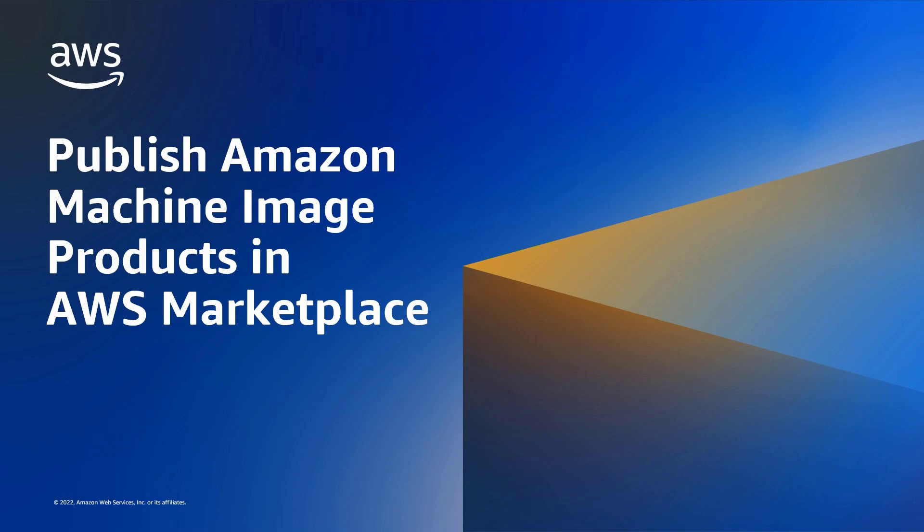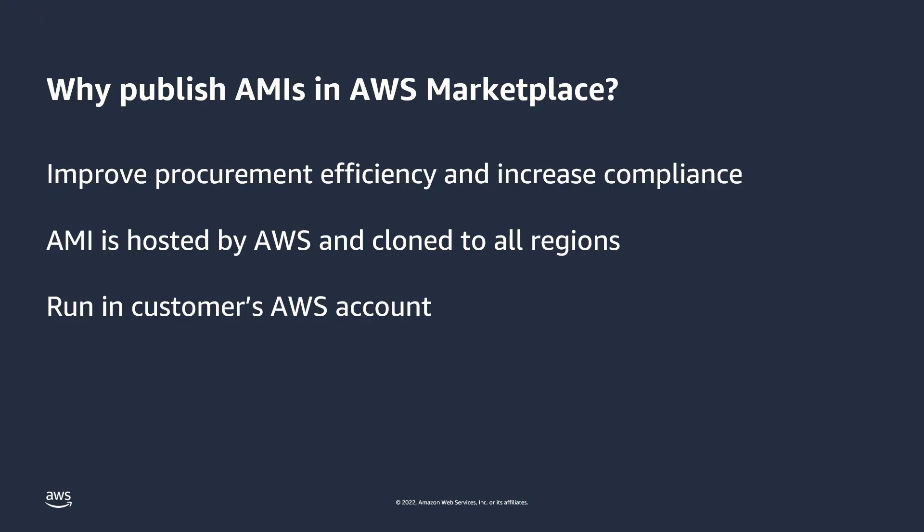In this video, you'll see how you can publish Amazon Machine Images, or AMIs, in AWS Marketplace. A technical validation report from Enterprise Strategy Group, or ESG, found that AWS Marketplace features contribute to improved procurement efficiency and increased compliance.